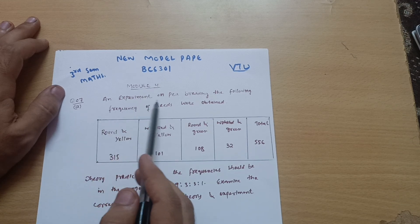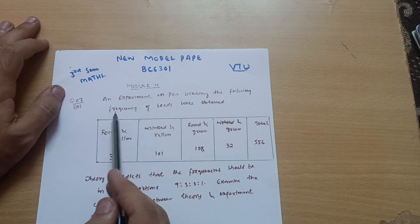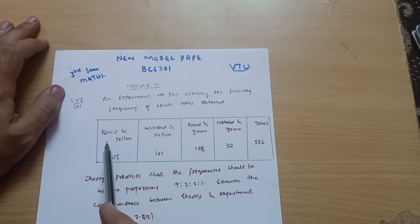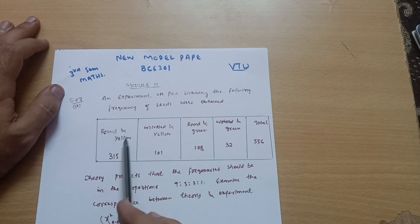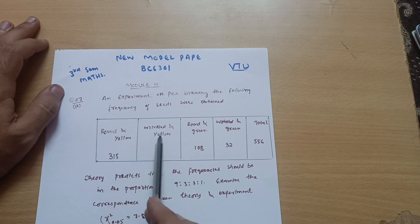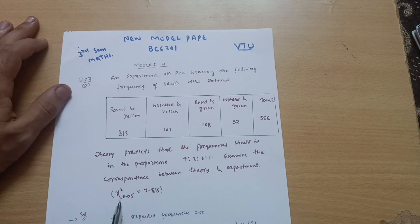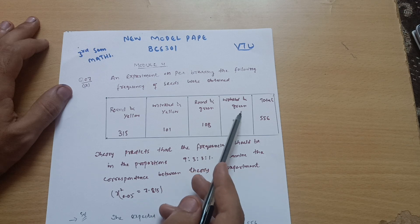An experiment on pea breeding, the following frequency of seeds were obtained. This is the data: round and yellow is 315, wrinkled and yellow is 101, round and green is 108, and wrinkled and green is 32.